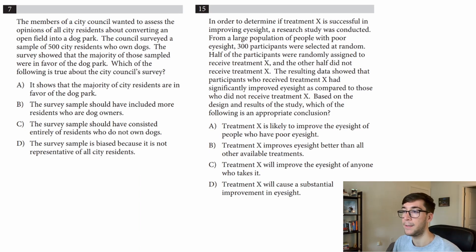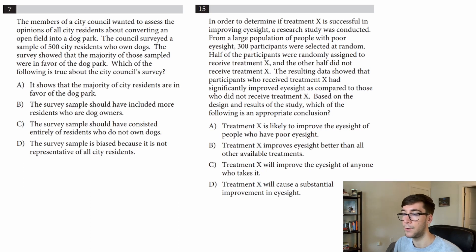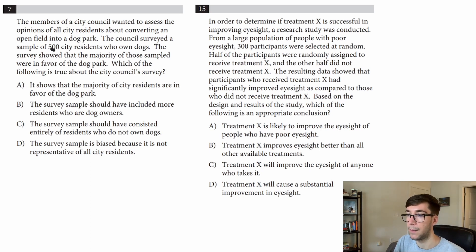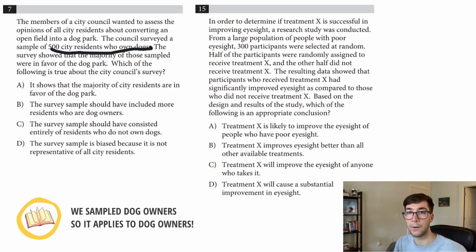Let's read the first problem: 'The members of a city council wanted to assess the opinions of all city residents about converting an open field into a dog park. The council surveyed a sample of 500 city residents who own dogs. The survey showed that the majority of those sampled were in favor of the dog park. Which of the following is true about the city council survey?' Before reading the options, let's think — who are they sampling? They are sampling 500 city residents who own dogs.